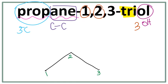An OH attaches here, an OH attaches here, and a third OH attaches here. So let's get rid of these numbers and let's attach the OH on the first, second, and on the third carbon.